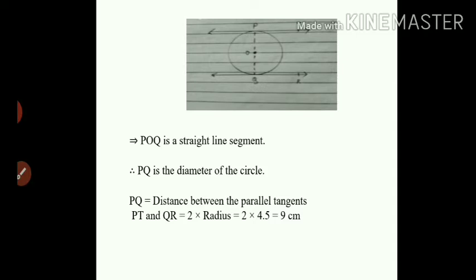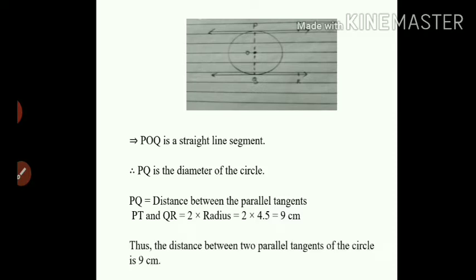Since OP and OQ are both radii, the distance between the two parallel tangents is 2 times the radius: 2 multiplied by 4.5 equals 9 cm. So the distance between the two parallel tangents of the circle is 9 cm.